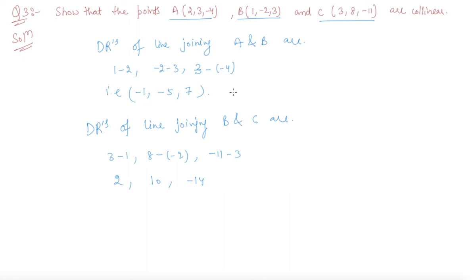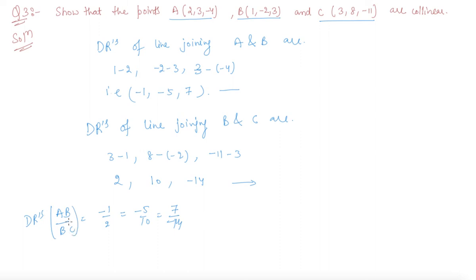As you will see, the direction ratios of line AB to line BC are in a particular ratio. Taking AB to BC: −1 to 2, −5 to 10, and 7 to −14, the ratio is −1/2 in each case. Since they are in ratio, A, B and C are collinear.